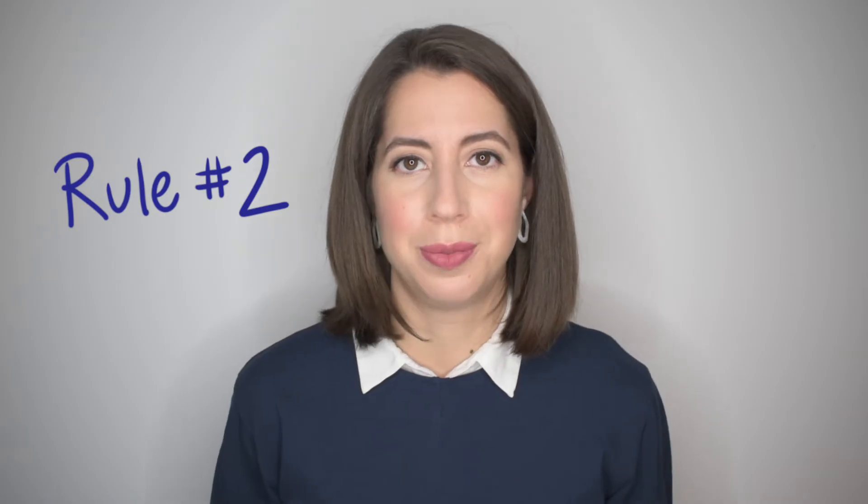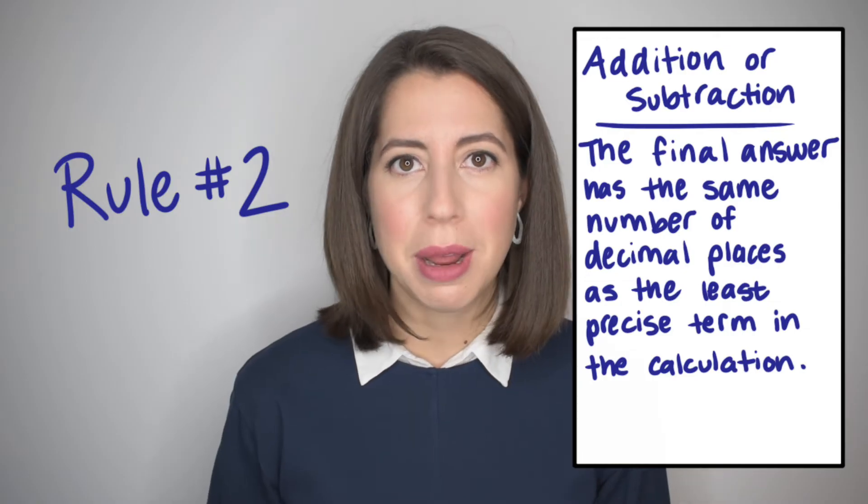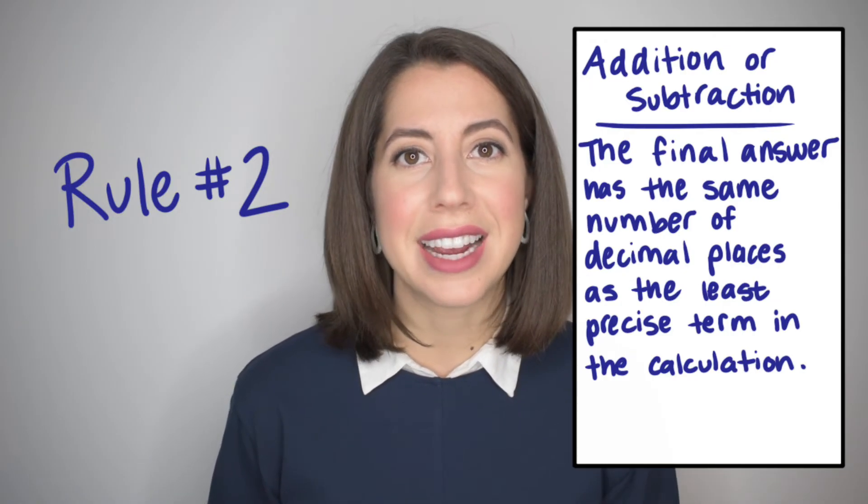Rule number two. For addition or subtraction, the final answer has the same number of decimal places as the least precise term in the calculation.